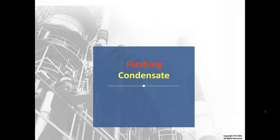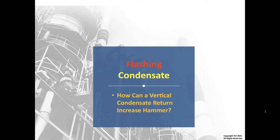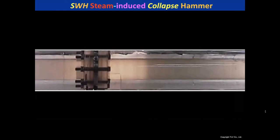The next concept I want to discuss is flashing condensate and how it creates hammer with a vertical return. From the first presentation, we had acrylic piping in the R&D lab at around 7 or 8 psi — watch how quickly the pockets dissipate in the horizontal line. Whenever you go from high pressure out of a steam trap to low pressure, you get flash steam. Watch how quickly that can dissipate.